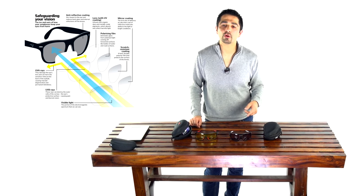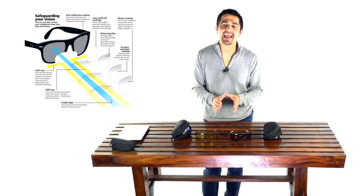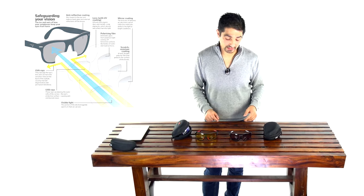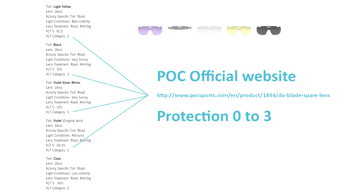i.e. category 4 or 99% filtering UVA and B up to 400 nanometers. POC themselves say that they're rating some of their sunglasses at a level 2 or 3, which means you may get 90% protection.